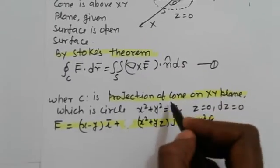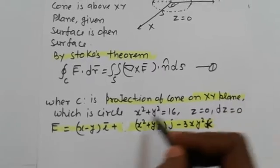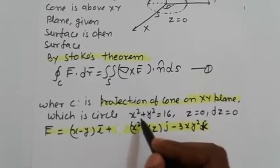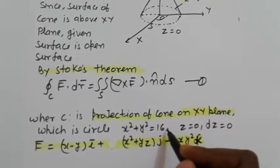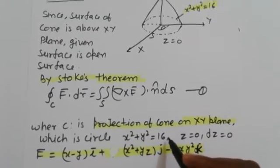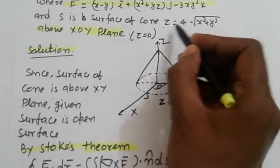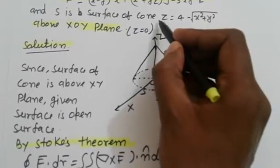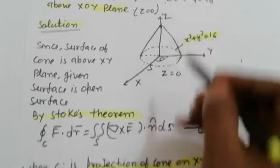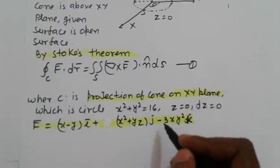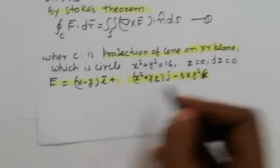We find the projection of the cone on the xy-plane, which is the circle x² + y² = 16, because putting z = 0 and squaring gives that equation. Also, since z = 0 on the boundary, dz = 0.